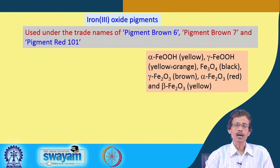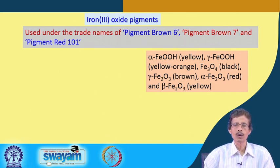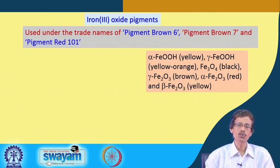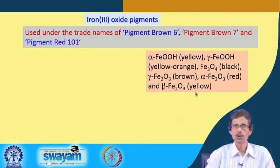Pure iron oxide compounds span colors from yellow to black. Alpha iron oxo-hydroxide (FeOOH), the hydrated form of the oxide, is yellow. The gamma variety is yellow-orange. Fe3O4 (magnetite) particles are black. Gamma Fe2O3 is brown, alpha Fe2O3 is red, and the beta form is yellow.